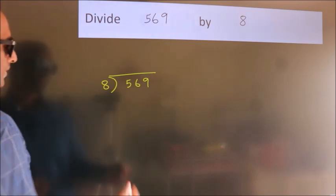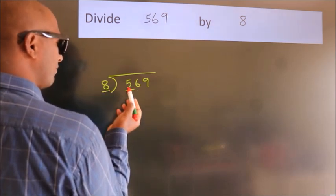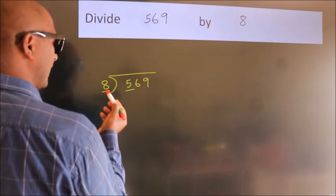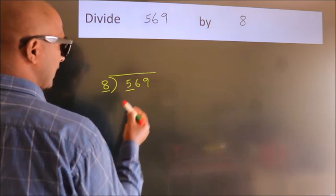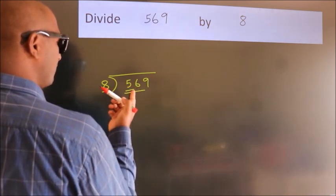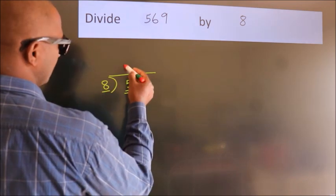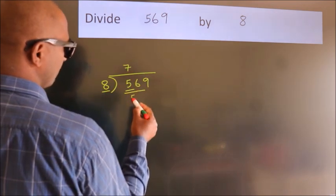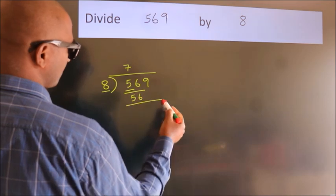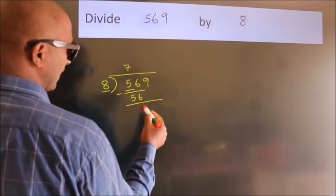Next, here we have 5, here 8. 5 is smaller than 8, so we should take 2 numbers: 56. When do we get 56 in 8 table? 8 times 7 is 56. Now we should subtract. We get 0.